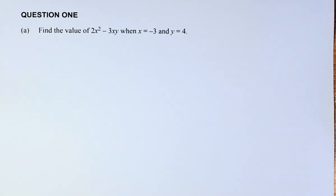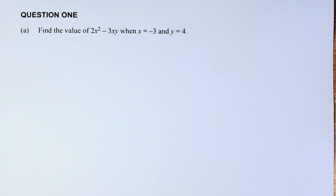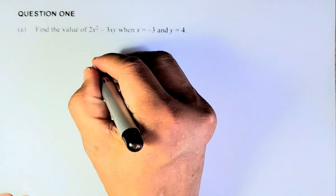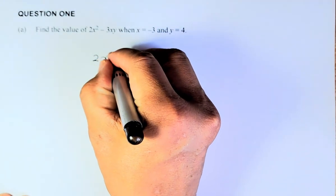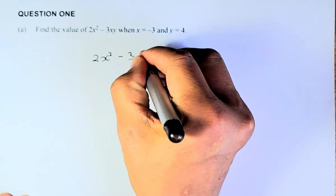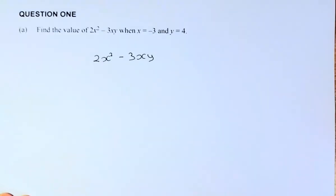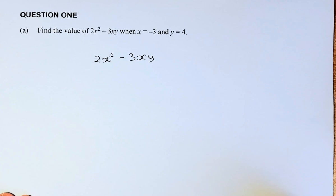So the first question is: find the value of 2x squared minus 3xy when x equals minus 3 and y equals 4. This is the substitution question. In other words, substitution means we replace the unknown with the number. So the equation is given as 2x squared minus 3xy. If we know that x is minus 3 and y equals 4, we are going to put the number to replace the expression.